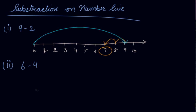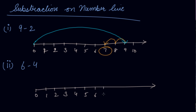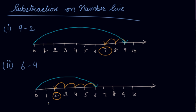Let's do another example. Draw the number line from 0 to 10. Now take a big jump from 0 to 6. Then you need to subtract 4 from 6, so take 4 backward steps: 1, 2, 3, and 4. The answer here is 2. This is the way you do subtraction on a number line.